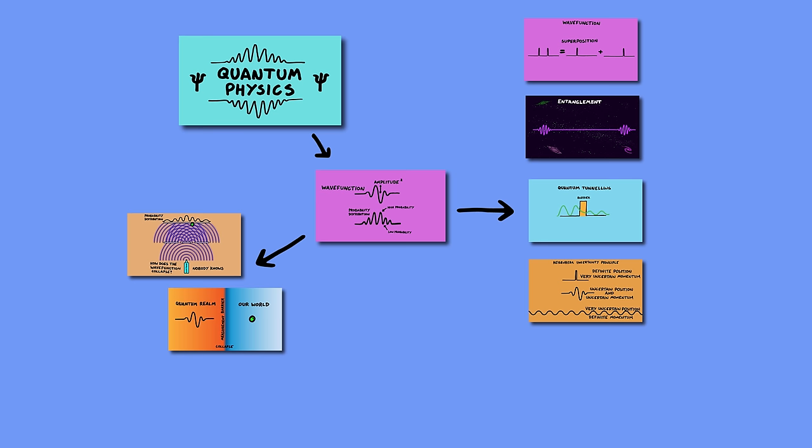So to round up, in quantum physics objects are described with wave functions, but when we measure them, what we see are particles. So this leads to particle wave duality, and also the measurement problem. And the consequence of these wave functions are the quantum phenomena of superposition, entanglement, quantum tunneling, the Heisenberg uncertainty principle, and energy quantization.